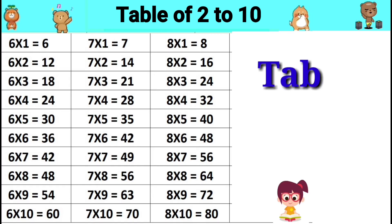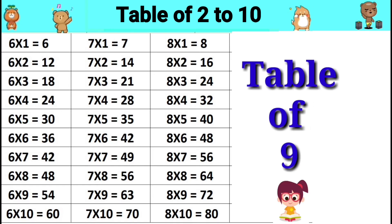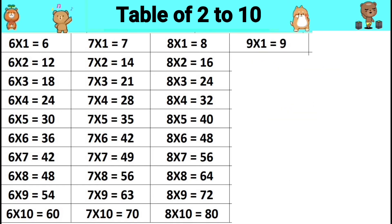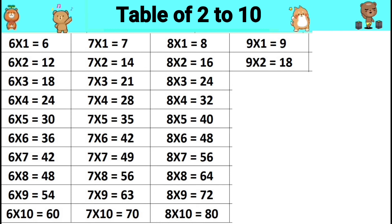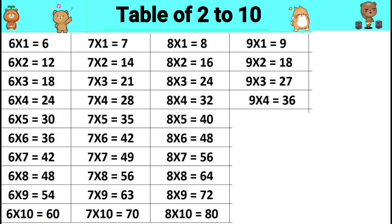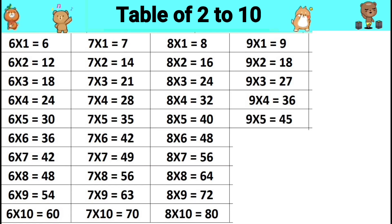Table of nine. Nine ones are nine. Nine twos are eighteen. Nine threes are twenty-seven. Nine fours are thirty-six. Nine fives are forty-five.